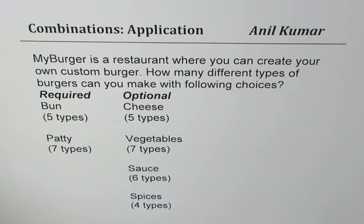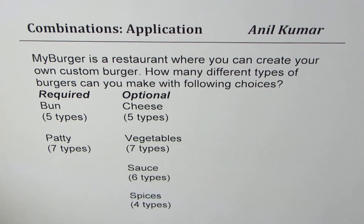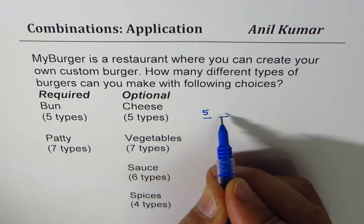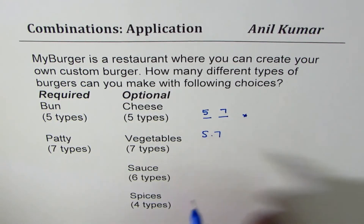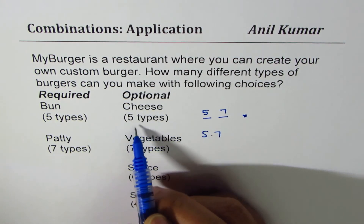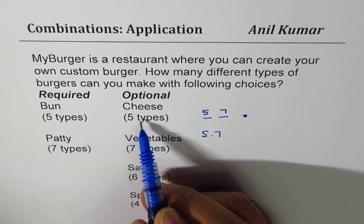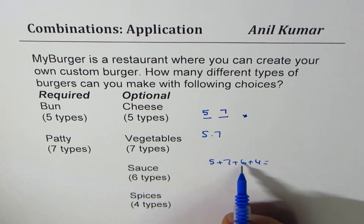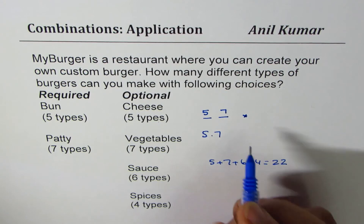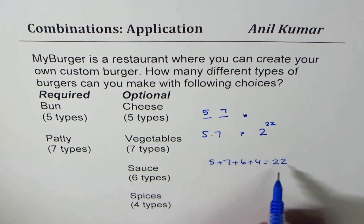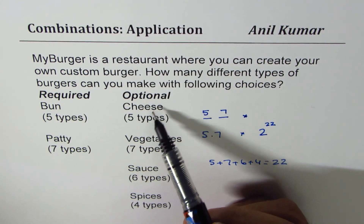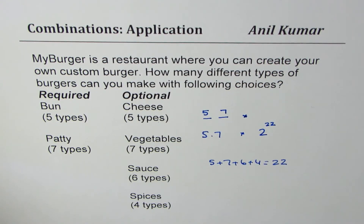You can pause the video, answer the question, and then look at my solution. The required items are must-have, so five types of buns times seven types of patties gives five times seven. For the optional items, each individual type can be selected or not, so we count all the optional quantities: five plus seven plus six plus four equals twenty-two options total.